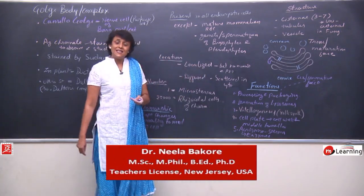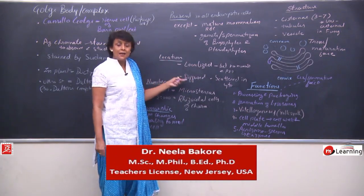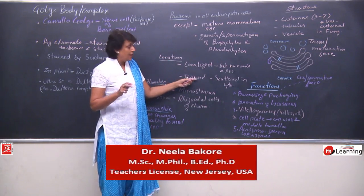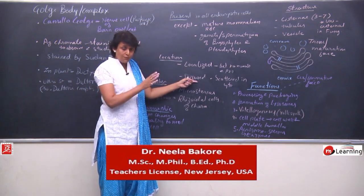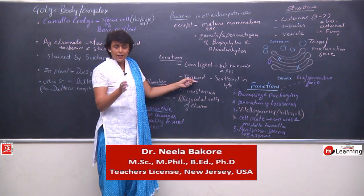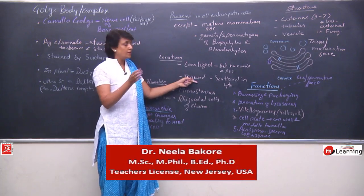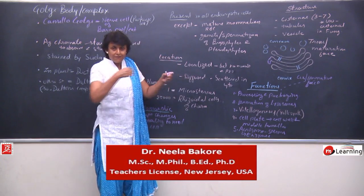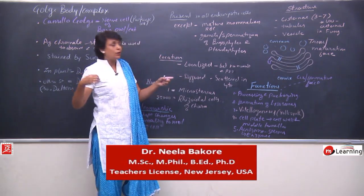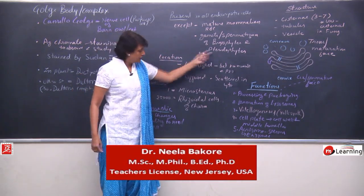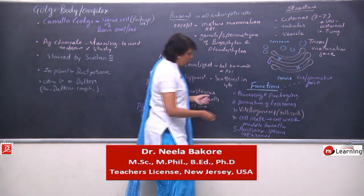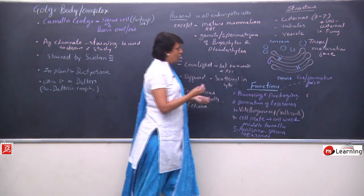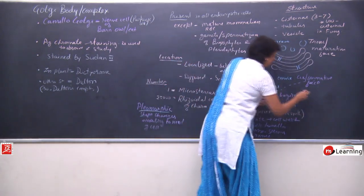Plus, it is an important component of the endomembrane system. The endomembrane system has all the membranes — nuclear membrane, endoplasmic reticulum, Golgi, lysosome, and plasma membrane — so everything is a part of it. Another function of Golgi body is that it is a part of the endomembrane system.